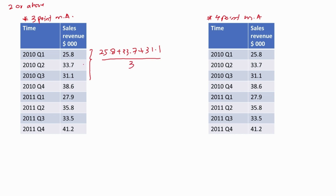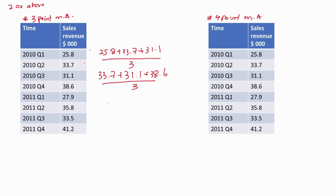Then we consider the next subsequent 3 points, which are the next 3 values. Likewise, we repeat these calculations for all the data. The average value will lie in the middle of these 3 values. For the first 3 values, the first average value will lie here — this is the first average. Then for the next subsequent 3 points, the average will lie here, because this is the middle of those 3 values.